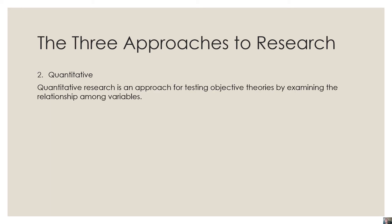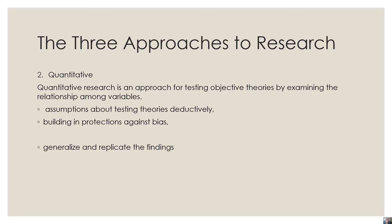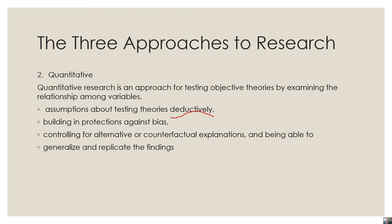How about quantitative? When we say quantitative research, we are referring to an approach for testing objective theories by examining the relationship among variables. Among the characteristics we could notice are assumptions about testing theories deductively, building in protections against bias, controlling for alternative or counterfactual explanations, and being able to generalize and replicate the findings. For example, an experiment in a laboratory is a kind of quantitative research.